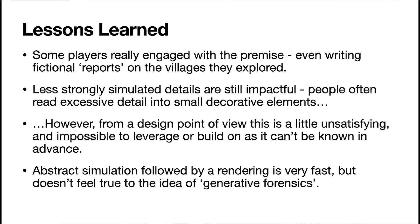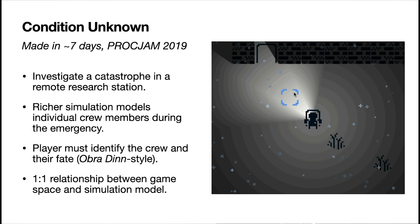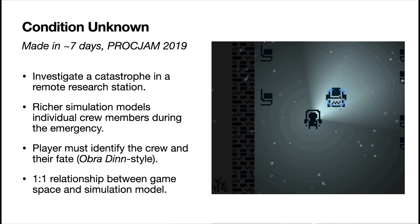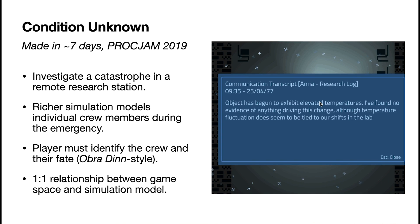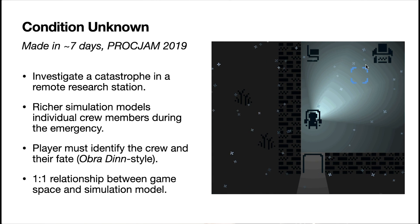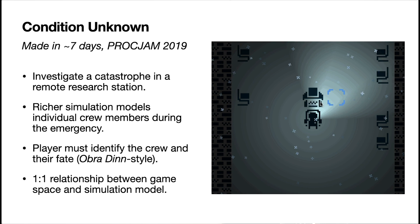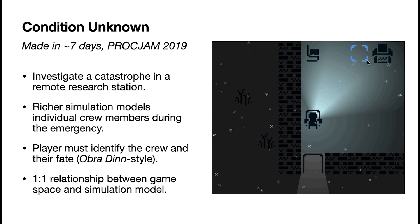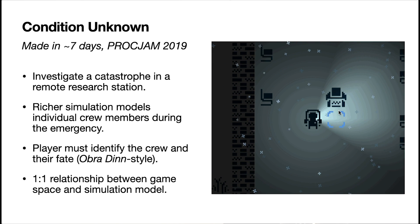The next prototype is called Condition Unknown. It had a much longer development period — about seven days in total. In this game you're investigating a catastrophe that's happened at a research station in the Arctic, kind of inspired by the movie The Thing. The key thing about this game is that the simulation is exactly the same as the space that you explore. We build this research lab using procedural generation, simulate the catastrophe, and then when the player turns up we simply remove all the dangers from the world and let them explore. There is really no difference between what is simulated and what the player sees.